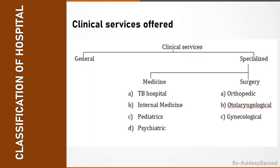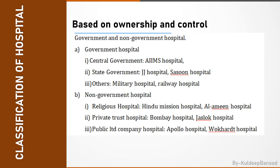Sometimes hospitals are classified on a clinical basis as general and specialized types, like medicine and surgery. Hospitals are also classified as government and non-government on the basis of ownership and control. Government hospitals include central government, state government, and others like railway hospitals and military hospitals. Non-government hospitals include religious hospitals, private trust hospitals, and public limited company hospitals. Examples are given in this slide.